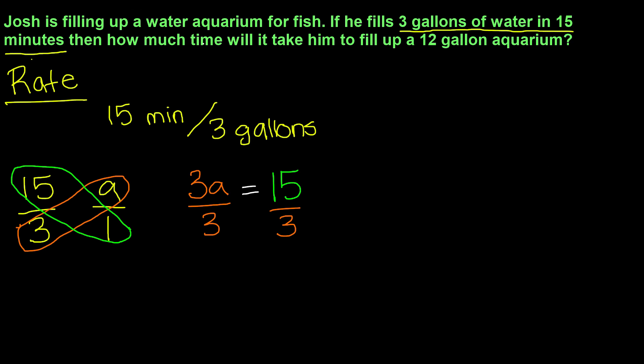So when you do so, 3 and 3 cancel each other out. And we are left with a is equal to, and then 15 divided by 3 gives us 5. So our unit rate is 5 minutes per gallon.